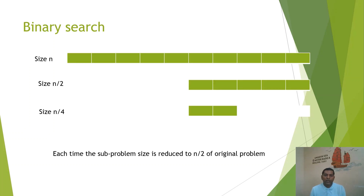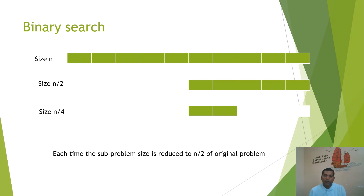In the binary search method, if the problem size is n, after finding the mid of a search set, we compare the key element to the mid of that search set of size n. If we find that the key is larger than the mid element, we neglect the first part and proceed with the remaining, dividing the set to n/2 size with the upper part remaining for further search.